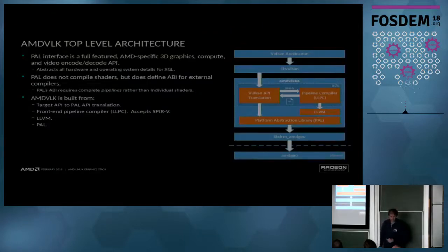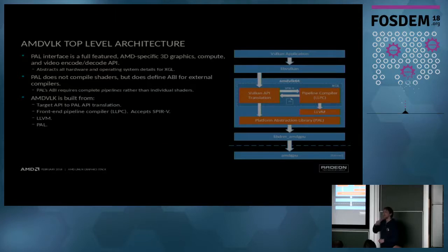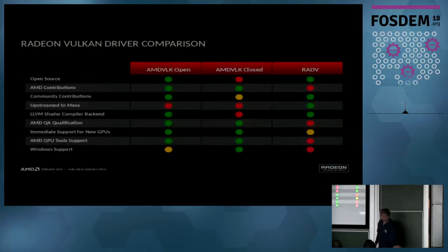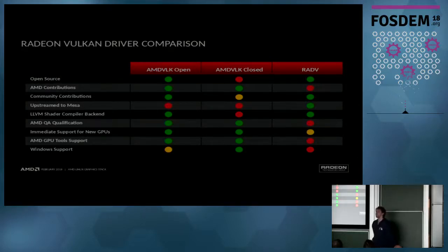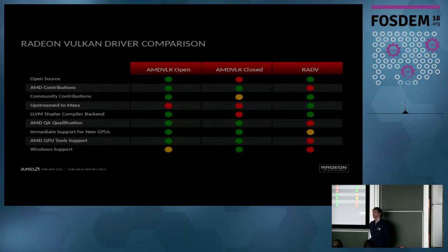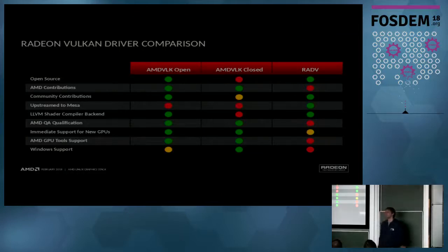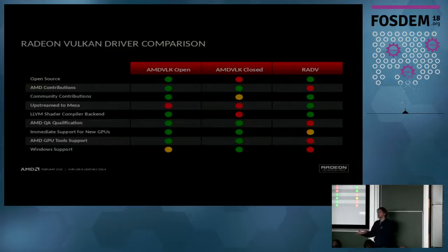A brief look at the architecture: from top to bottom, when a Vulkan application is running there is a loader libVulkan which is provided by Khronos — actually developed by LunarG — but it's vendor independent and it loads the Vulkan driver. The Vulkan driver internally has two parts: the part called XGL because of legacy reasons, which lives in its own repository, and the part called PAL which also lives in its own repository.